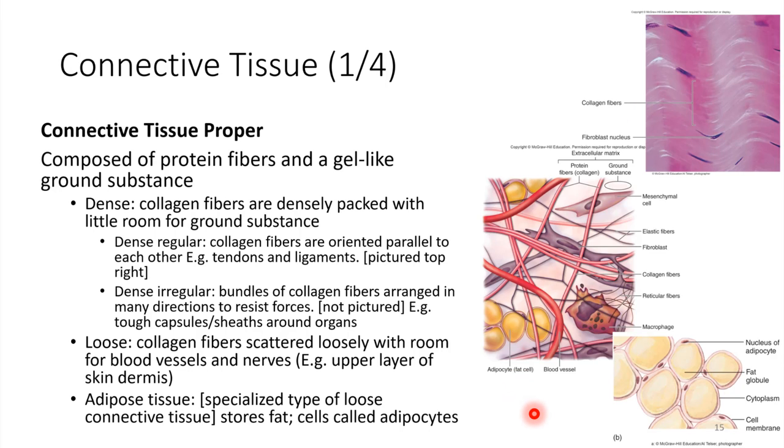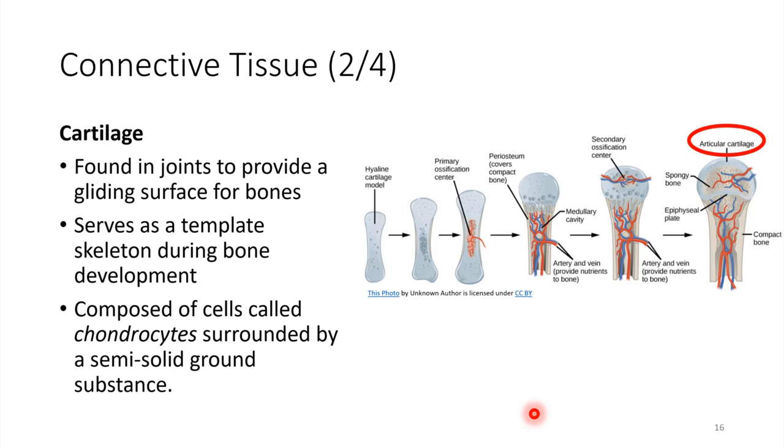Again, what do they all have in common? They all have cells living in an extracellular matrix. Let's take a look at the next type, cartilage.